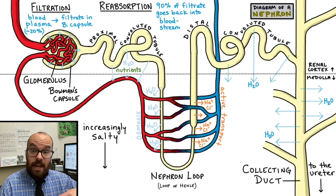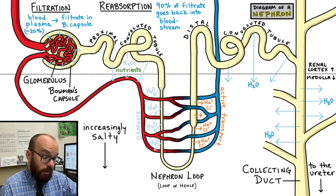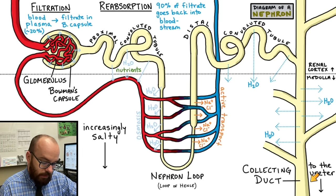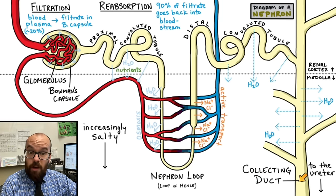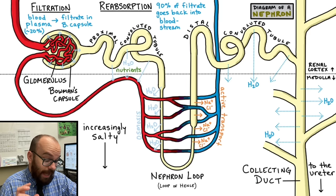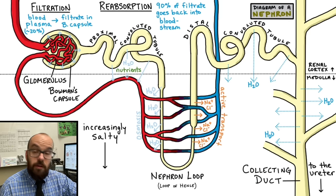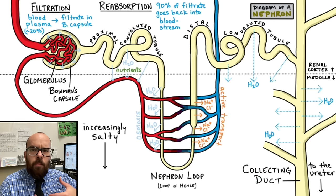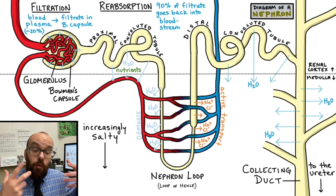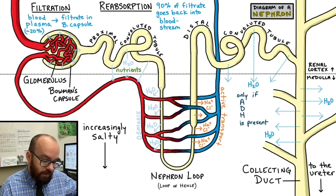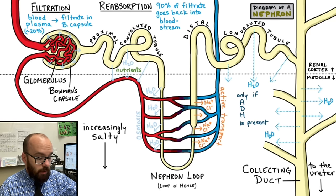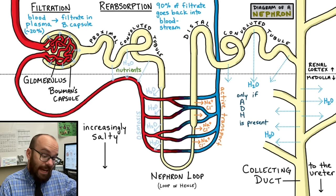If we're dehydrated, we're trying to conserve water — we don't want any water leaving through the collecting duct to the ureter, because we'd lose it when we urinate. Instead, we want to get any remaining water in the filtrate back into the bloodstream. So we let it leak out and diffuse back into our bloodstream to keep it in circulation. But how does our body regulate that? There's a special hormone involved. Reabsorption of water in the distal convoluted tubule and collecting duct only happens if ADH is present.